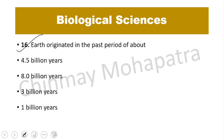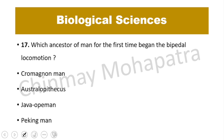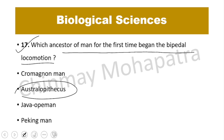Question number 16. Earth originated in the past, about 4.5 billion years ago. Question number 17. Which ancestor of man for the first time began bipedal locomotion? The answer is Australopithecus, who first demonstrated complete bipedal locomotion.